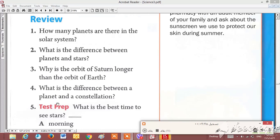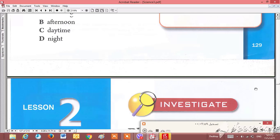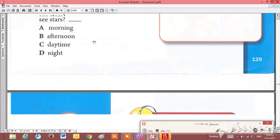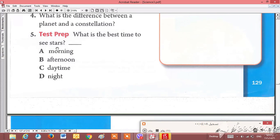What is the difference between a planet and a constellation? We say that a constellation is a group of stars that make a shape. A planet is a large body of rock or gas that orbits the sun. This question is important: what is the best time to see stars? Of course, nighttime.